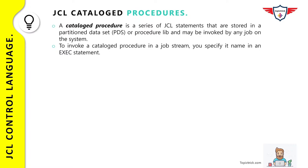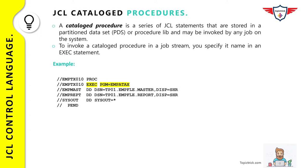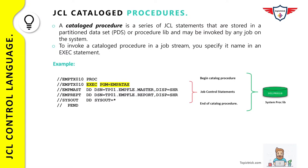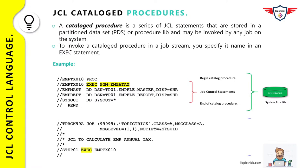Catalog procedures can be stored in the system procedure library SYS1.PROCLIB (used for IBM-supplied procedures), or in a private library. The name of the catalog procedure is its member name or alias in the library. Interview question: if you have created a catalog procedure stored in your private library, how will you invoke it from a JCL? The example has two sections: the top section is a catalog procedure and the bottom section is a sample JCL that invokes it — the procedure is stored as a PDS member. The catalog procedure starts with PROC and ends with PEND.